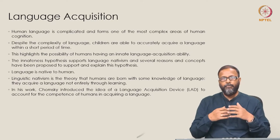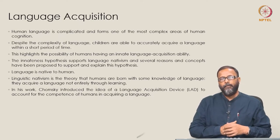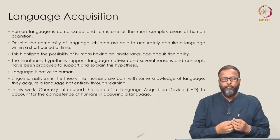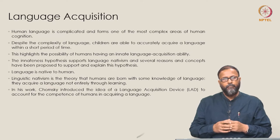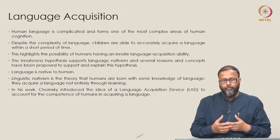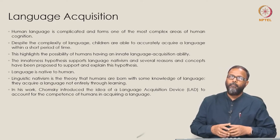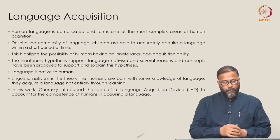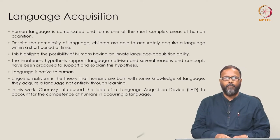The innate hypothesis supports language nativism, and several reasons and concepts have been proposed to support and explain this hypothesis. These three key concepts — language acquisition device, LAD, universal grammar, and poverty of stimulus — are very crucial and must be understood in a continuum. Linguistic nativism believes language is native to humans and they are born with some knowledge of language. They acquire language not entirely through learning, but through an autonomous, effortless process. Learning language is a child's play for a child. Chomsky introduced the idea of language acquisition device.